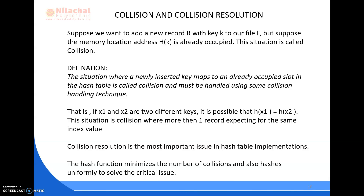Hash collision is defined as the situation where a newly inserted key maps to an already occupied slot in the hash table. There must be some steps to avoid this collision — these methods are known as collision handling techniques or collision resolution. That is, if X1 and X2 are two different keys, it is possible that H(X1) equals H(X2). This situation is a collision where more than one record expects the same index value. Collision resolution is the most important issue in hash table implementations, and the hash function minimizes the number of collisions by hashing uniformly.